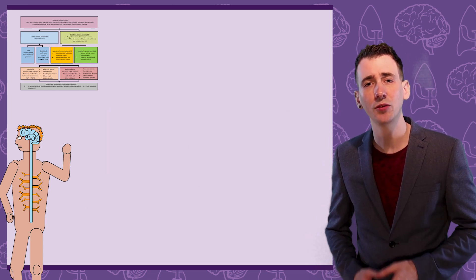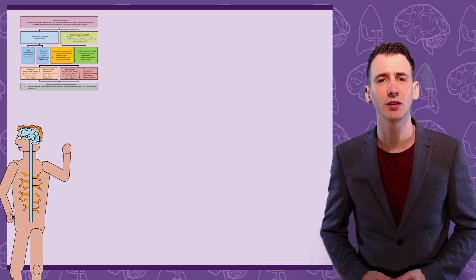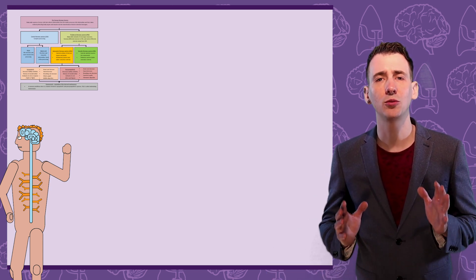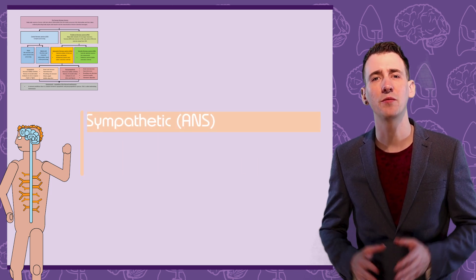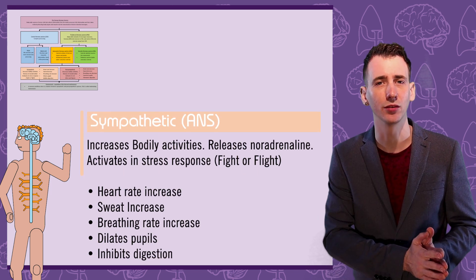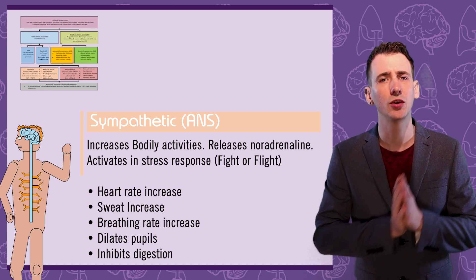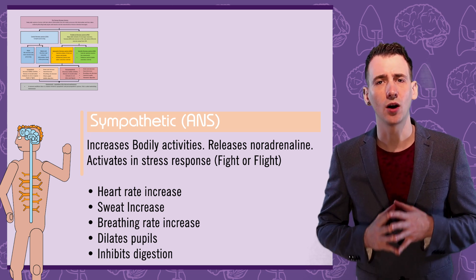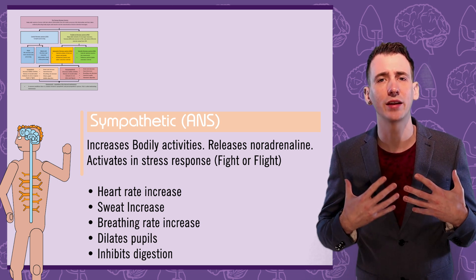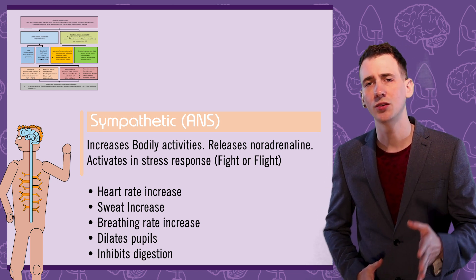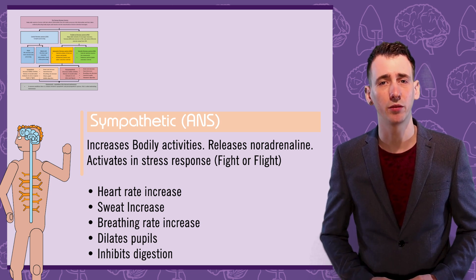The autonomic system itself is broken down into two processes: sympathetic and parasympathetic. Both of these work together to regulate your internal environment. The sympathetic branch activates in a stress response. These neurons release noradrenaline neurotransmitter and will increase your bodily activities. So your heart and breathing rate will increase, your pupils will dilate, and your digestion will stop. This is often known as a fight or flight response, and I'll talk about this much more in a couple of videos.